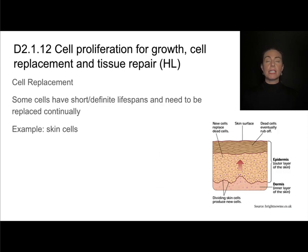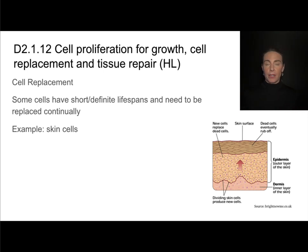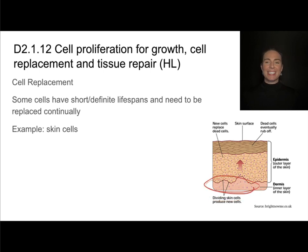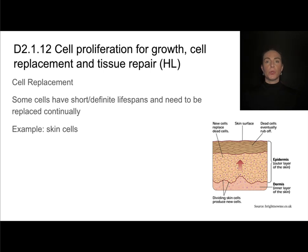The second reason for cell proliferation is cell replacement. A lot of our cells have a definitive lifespan, and some of them can be relatively short — like a matter of days. No matter what their lifespan is, if they have a pre-programmed cell death, then we're going to need a process for replacing them. A great example is skin cells. On the very outer layer of our skin, these are actually dead cells. New cells are produced way down in the dermis, the very inner layer of our skin. These brand new skin cells eventually push their way to the top, and by the time they reach the surface, they are dead cells — so we continually need a new supply of skin cells being pushed towards the surface.